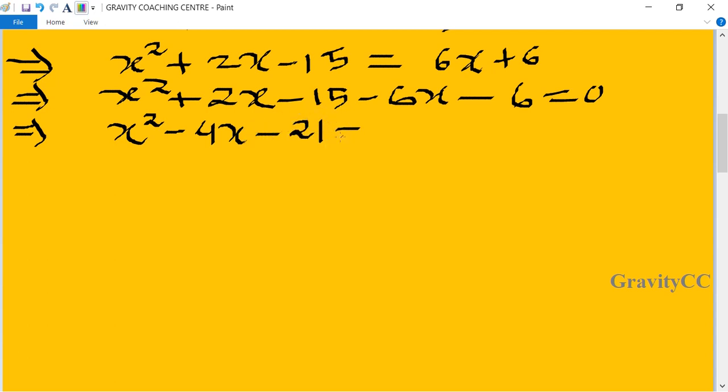Now we're splitting the middle term, so it will become x squared minus 7x plus 3x minus 21 equal to 0.